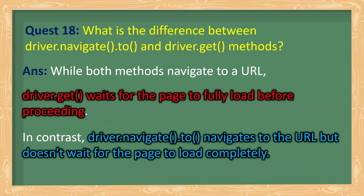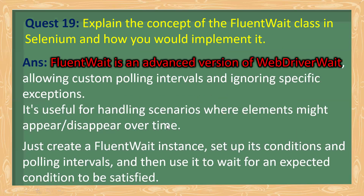What is the difference between driver.navigate().to() and driver.get()? Both methods are used to navigate to a URL, but driver.get() waits for the page to be fully loaded before proceeding — it will not move forward until the page is completely loaded. In contrast, driver.navigate().to() navigates to the URL but does not wait for the page to load completely.